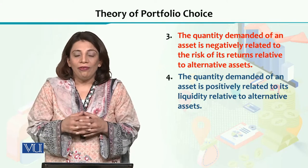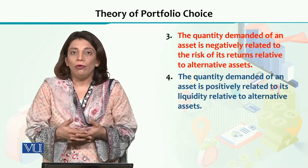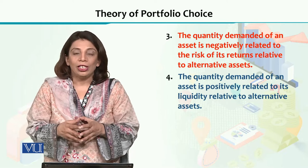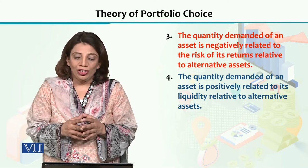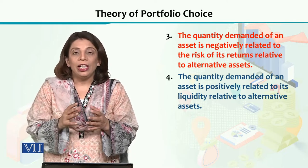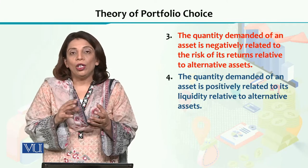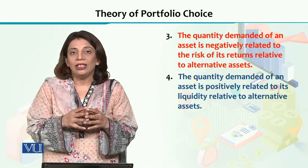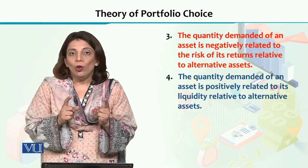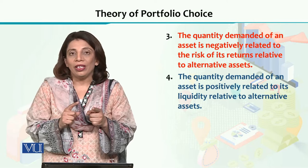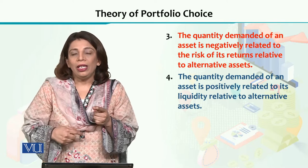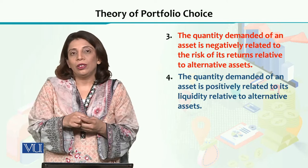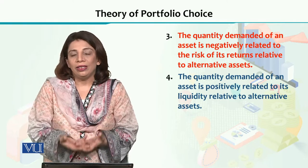The fourth and final factor that influences quantity demanded has a positive relationship with it — and that is its liquidity compared to alternative financial assets. You compare the liquidity of this asset to the liquidity of other financial assets you have available. The more readily convertible into cash a financial asset is, the higher its quantity demanded will be.